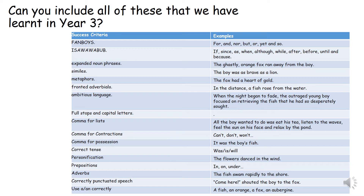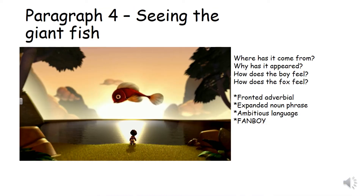There are all the examples down the side here, so if you want to pause the video and just have a look to remind yourself, then that's fine. So paragraph four is when the boy sees the giant fish — think about where it's come from, why it has appeared, how does the boy feel, and how does the fox feel. You should have already done this in your storyboard planning, so keep referring back to that and it will help you with your writing. There are four things I want you to include in this paragraph: a fronted adverbial — remember, put that at the start of your sentence and then put a comma afterwards — an expanded noun phrase, ambitious language, and a FANBOY.